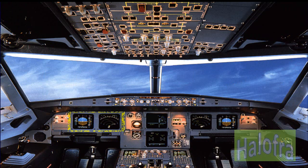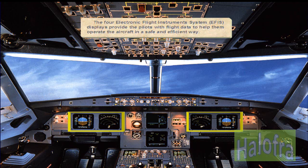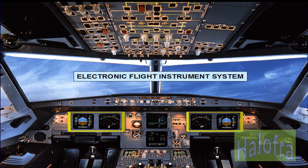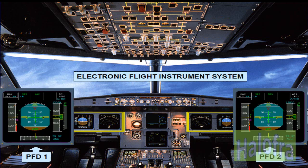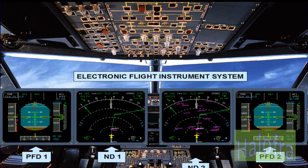The four electronic flight instrument system EFIS displays provide the pilots with flight data to help them operate the aircraft in a safe and efficient way. Flight parameters are displayed on primary flight displays, while navigation data is displayed on navigation displays.